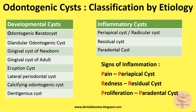First, let's memorize the inflammatory cysts. We all know the cardinal signs of inflammation are rubor, tumor, dolor, calor — that is pain, redness, proliferation, and local rise of temperature. For the inflammatory cysts, the P of pain gives our periapical cysts, and R from redness gives our residual cysts.